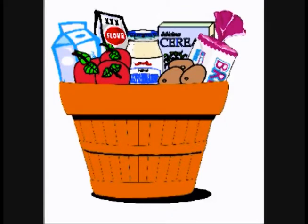The Consumer Price Index is a basket of about 400 commonly purchased goods and services that is used to represent overall consumption. Each month, the Department of Labor checks the prices of these 400 items in 85 different areas all over the U.S.